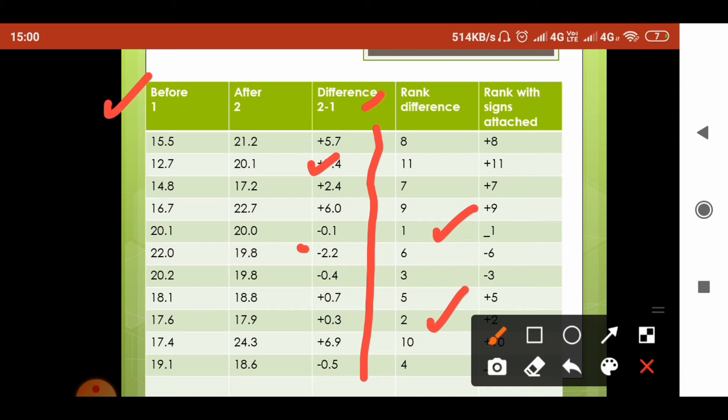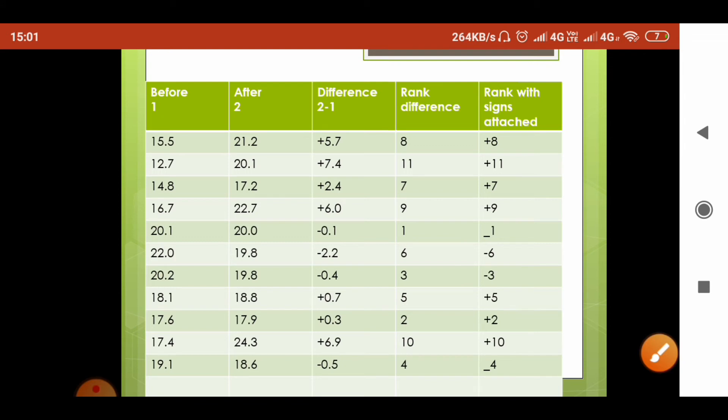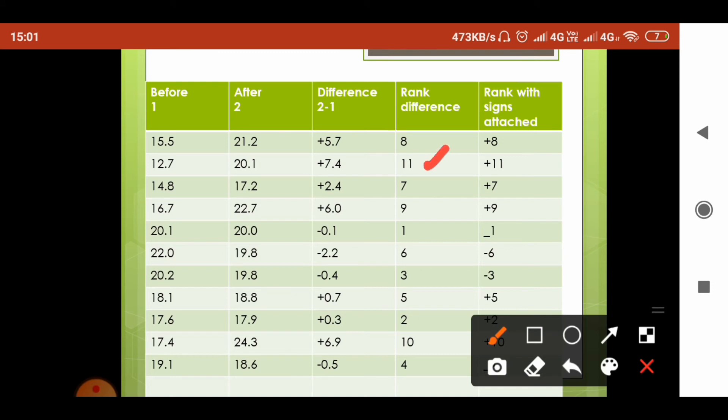We take the absolute values and give the rank. There are 11 data points, so the largest one, 7.4, will be given the 11th rank. Similarly, we have assigned ranks.